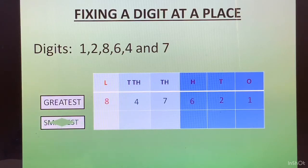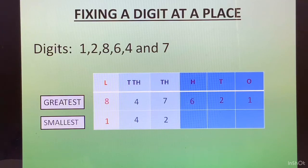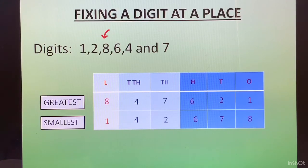For the smallest number, we again fix 4 in the ten-thousands place. The smallest digit is 1, which goes in the lakhs place. Then 2 in the thousands place. Since 4 is already taken, we go to 6 in the hundreds place, then 7 in the tens place, and 8 in the ones place. This is how we form the greatest and smallest number by fixing a digit at a particular place.